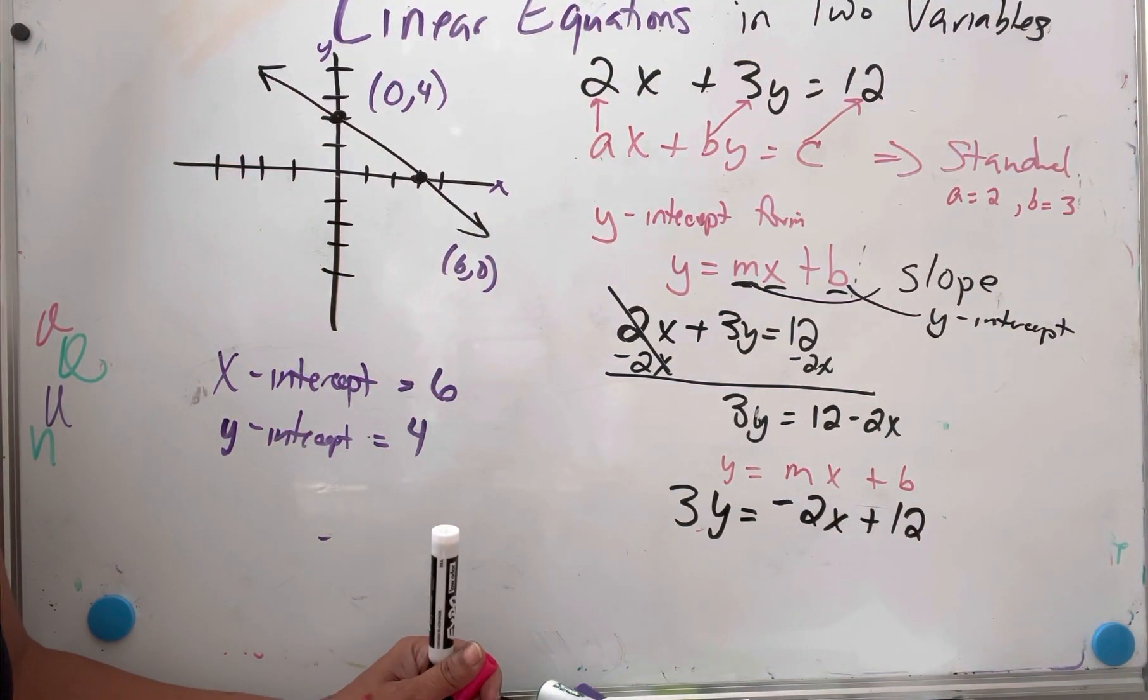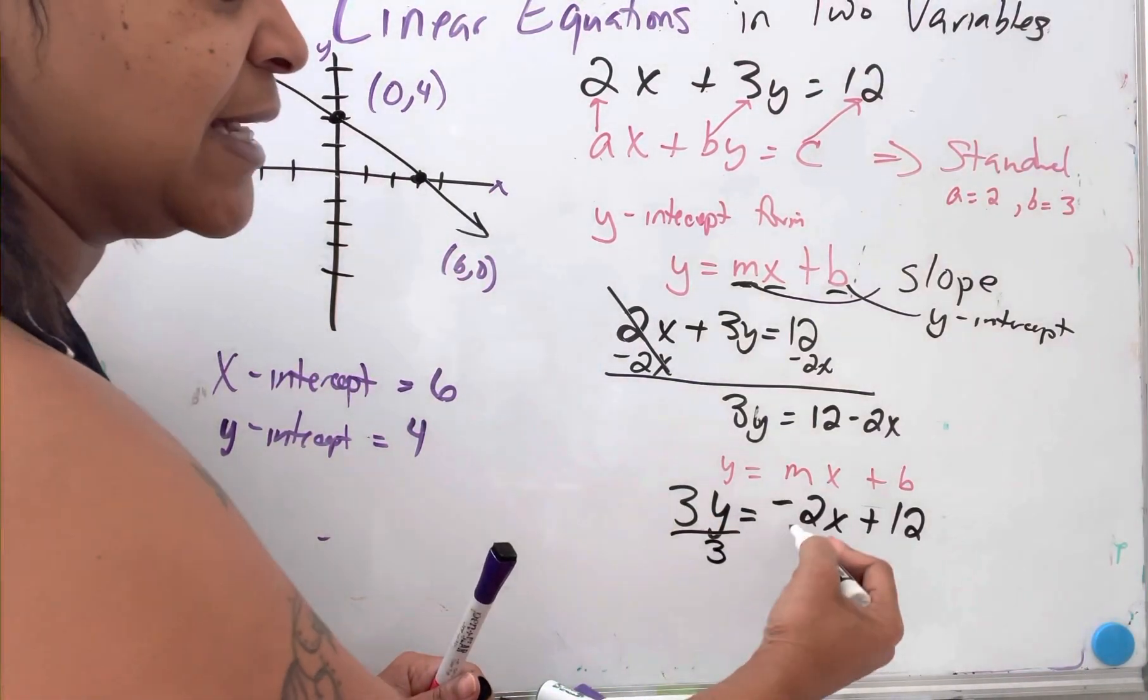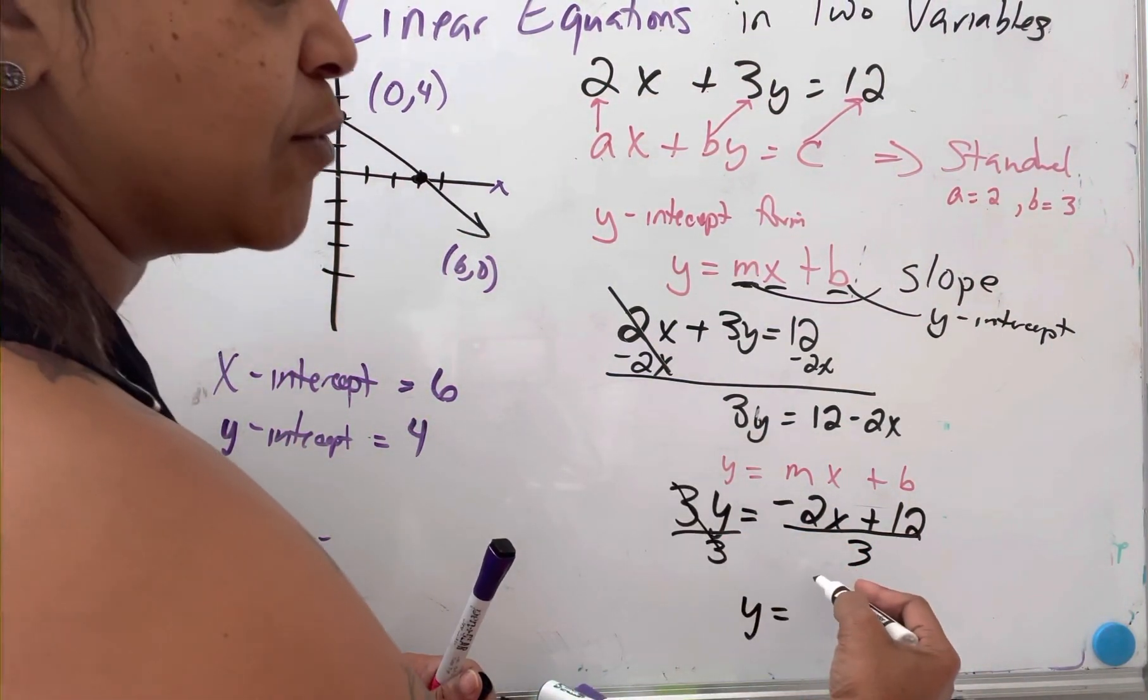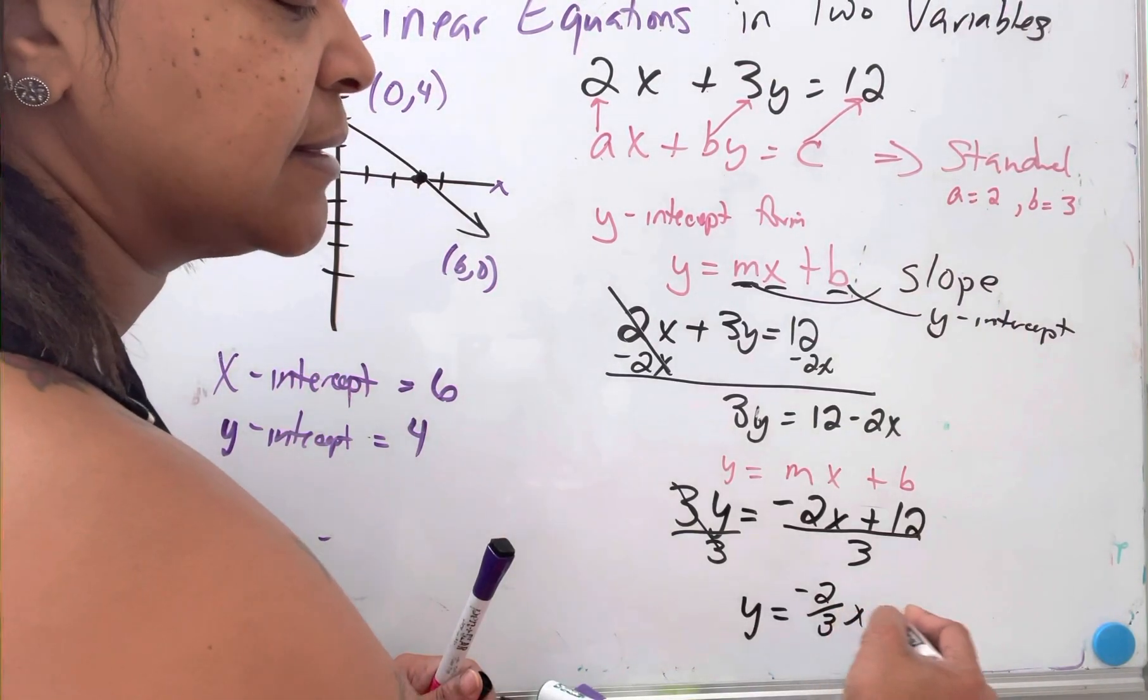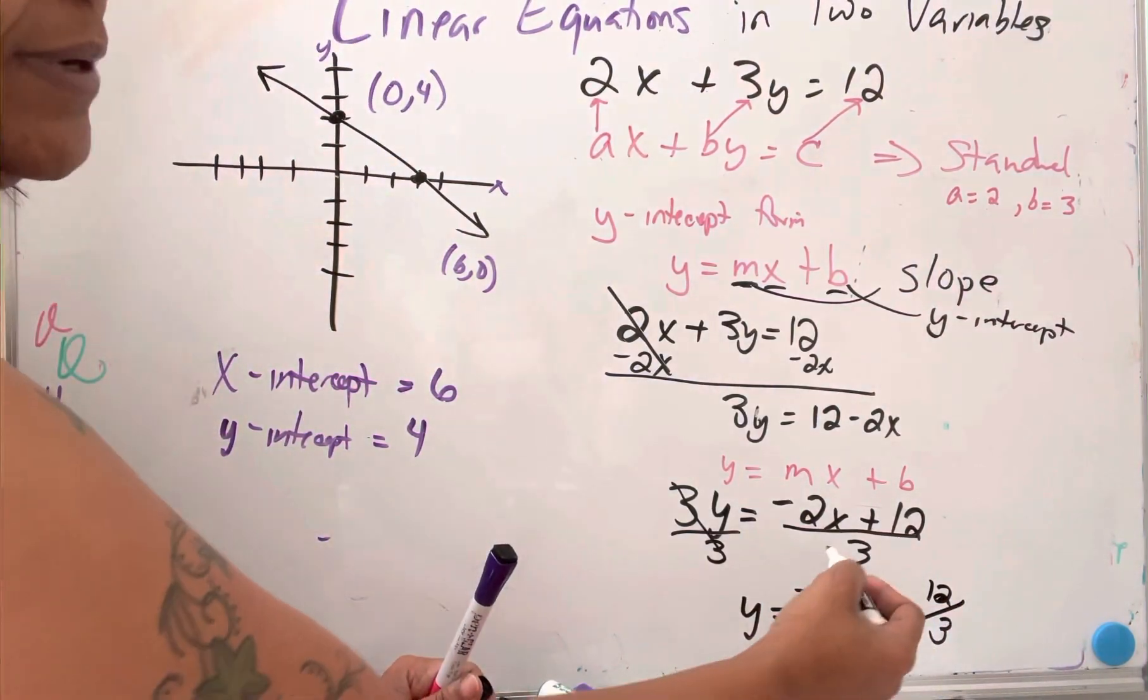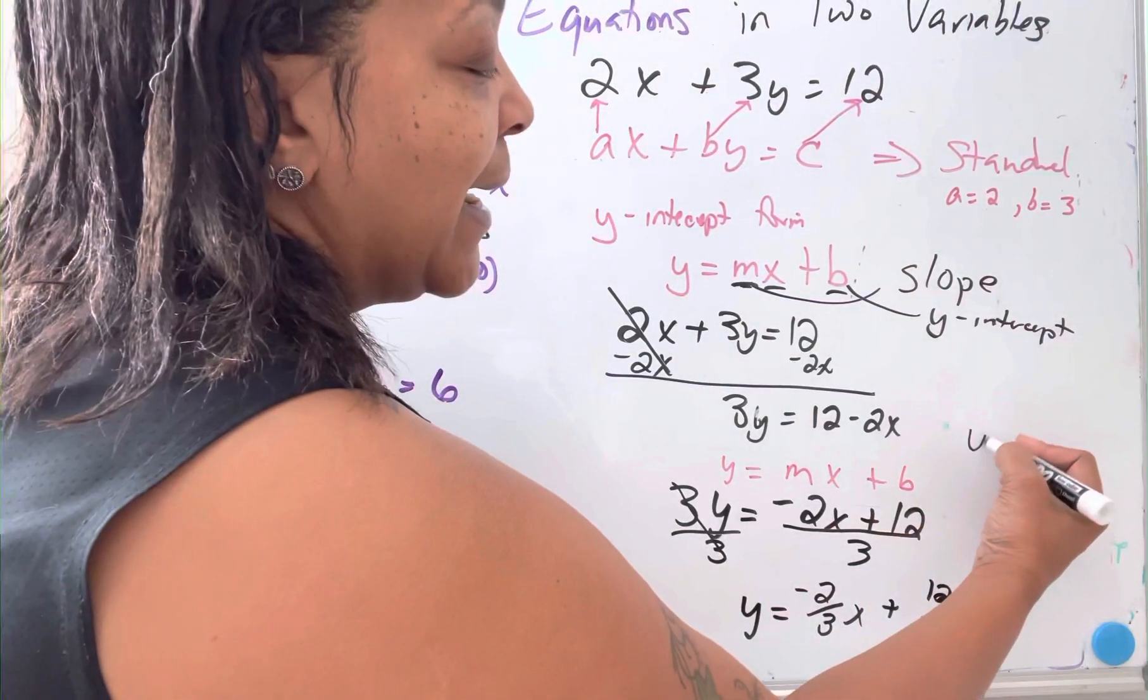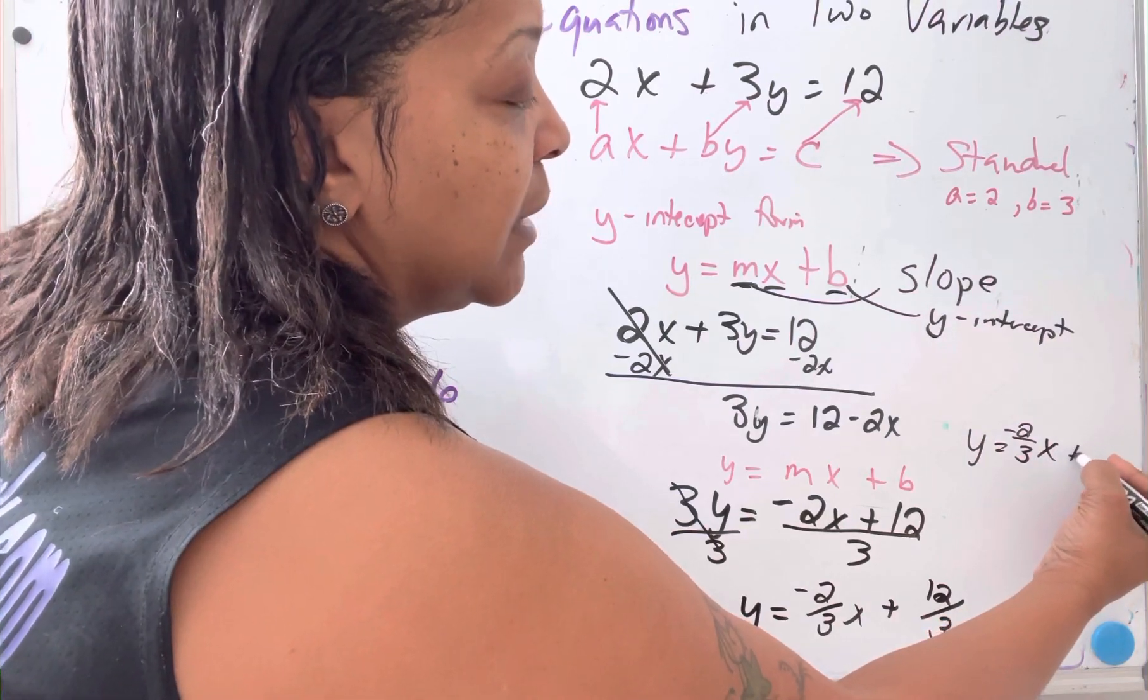We're almost done because I just need to get rid of this 3 that's attached to y. If we divide both sides by 3, we now have something that is in standard form. This is negative 2x plus 12 over 3. I just separated the 3 so it looks better, and now this gives me my final equation of y equals negative 2x over 3 plus 4.